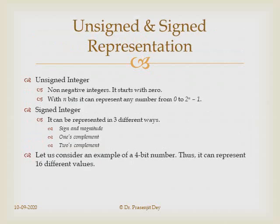In unsigned representation, every number is positive, starting from 0, and with n bits we can represent any number from 0 to 2ⁿ−1. In signed integer representation, there exist three ways: signed magnitude, one's complement, and two's complement.